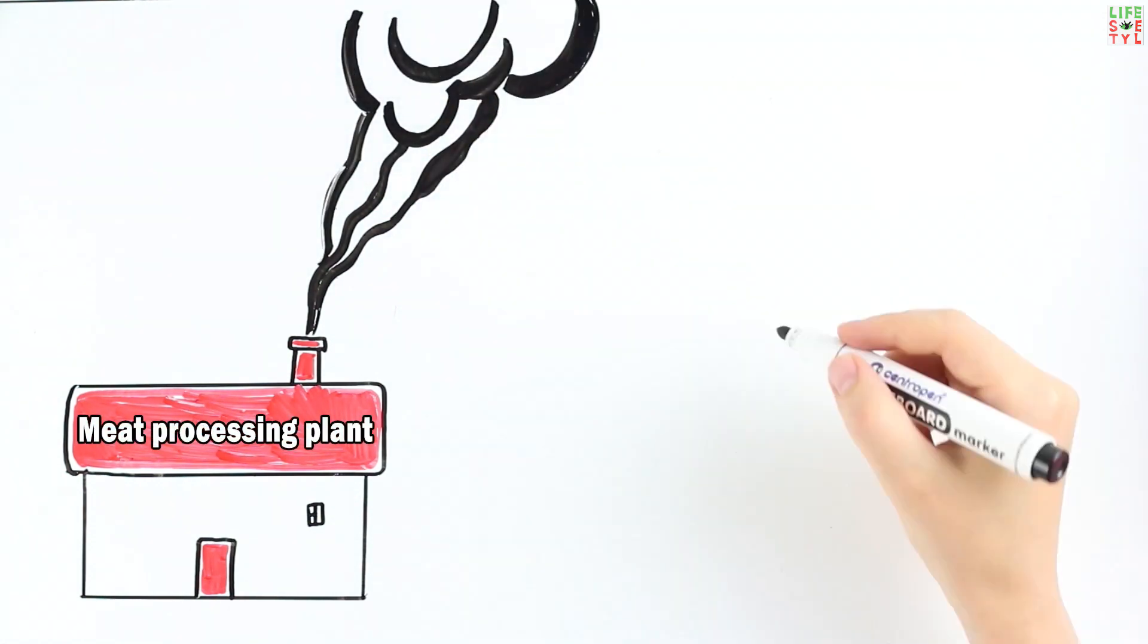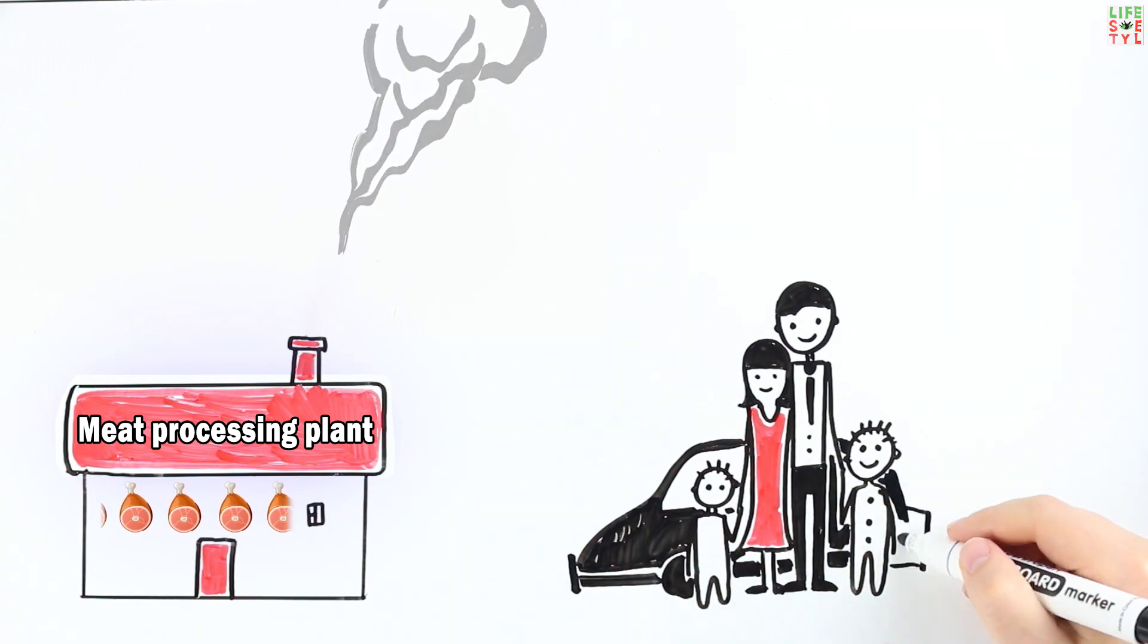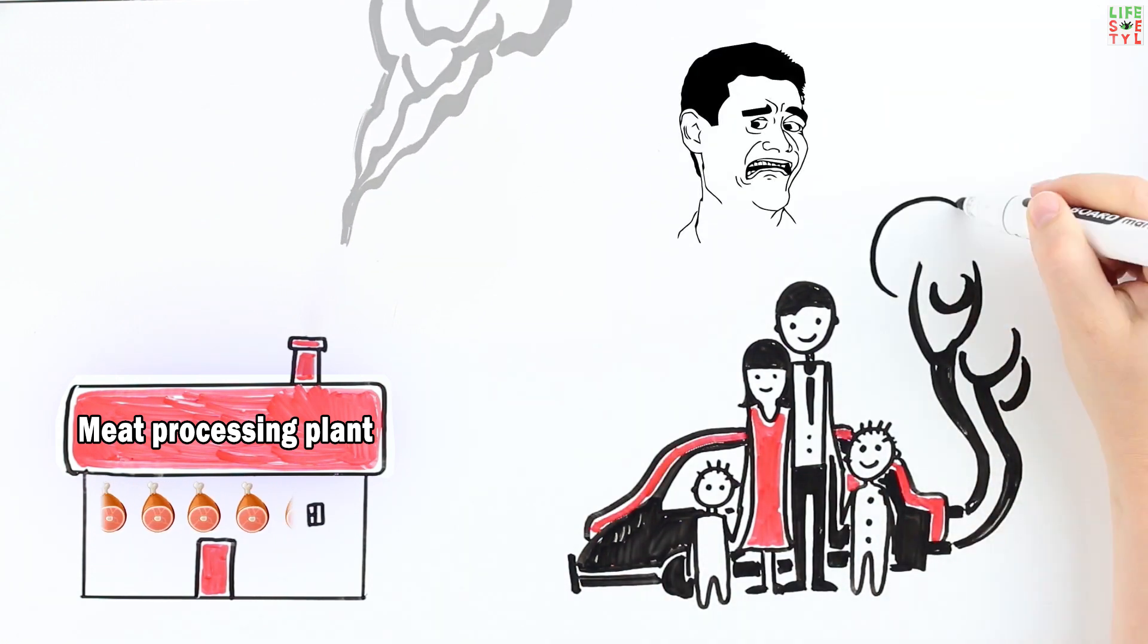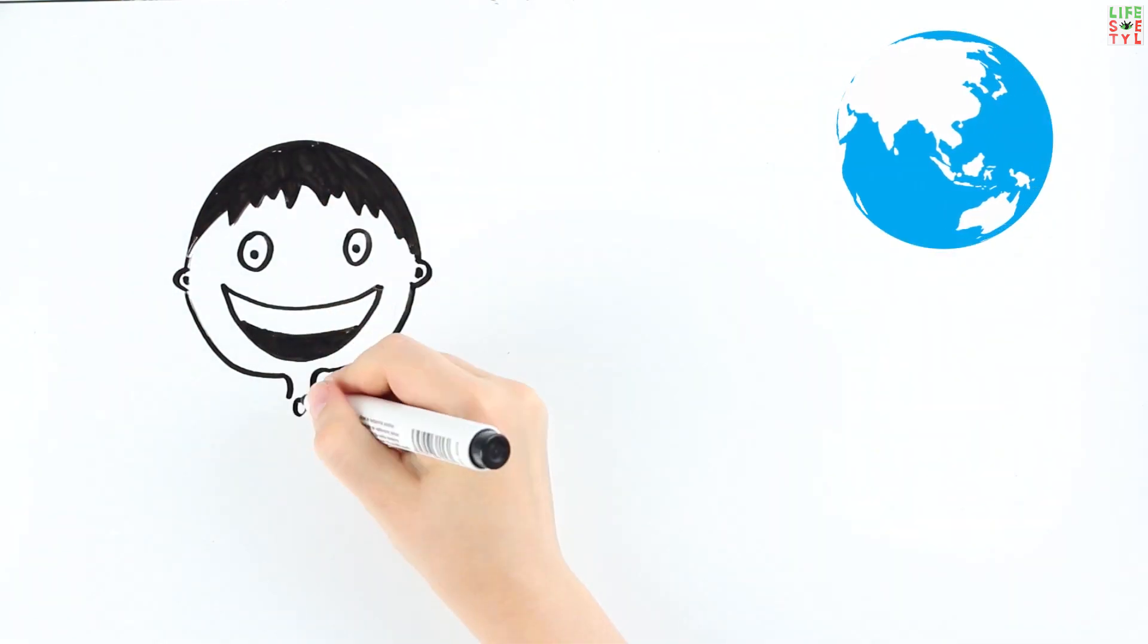According to studies, the amount of greenhouse gases emitted each year from meat production sufficient to feed a family of four is equivalent to the pollution caused if those members use two cars. A vegetarian diet will reduce mortality so that 7 million fewer people will die each year.